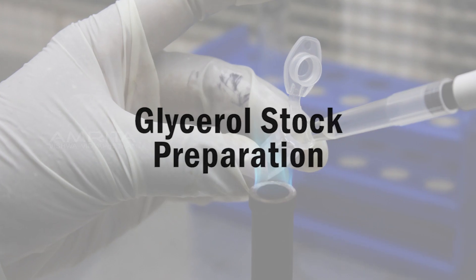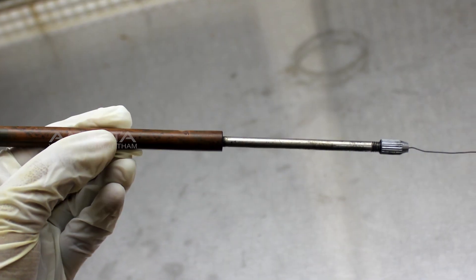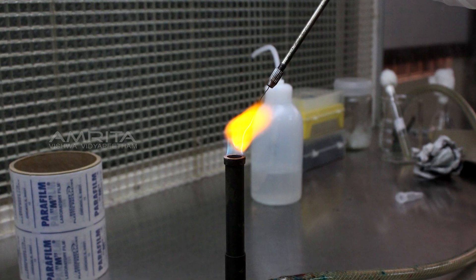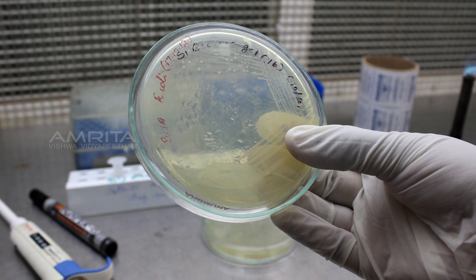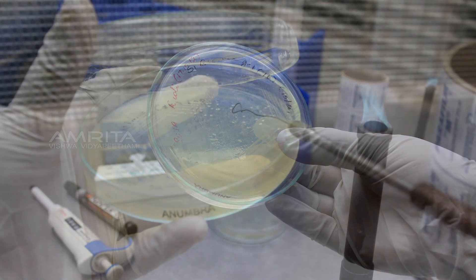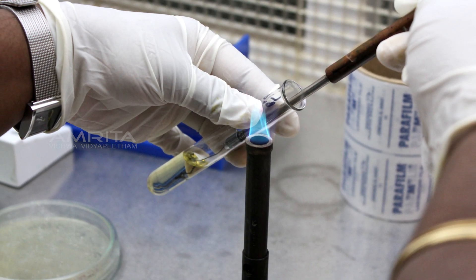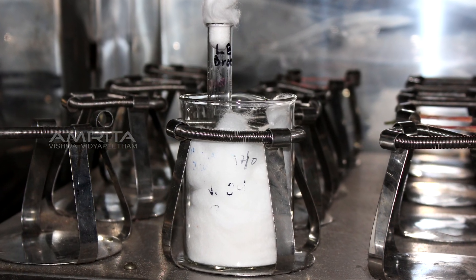Procedure: Glycerol stock preparation. Sterilize the inoculation loop in the blue flame of the Bunsen burner until red hot and allow it to cool. Pick a single colony of E. coli DH5-alpha from a culture plate and inoculate into LB broth. Place the plate in an incubator for overnight incubation at 37 degrees Celsius.